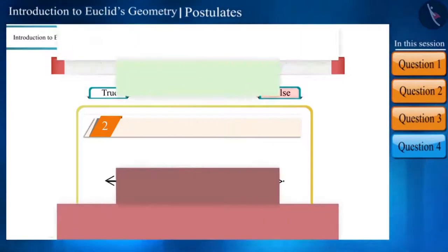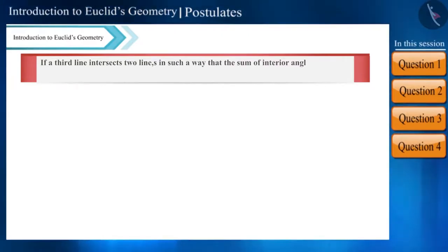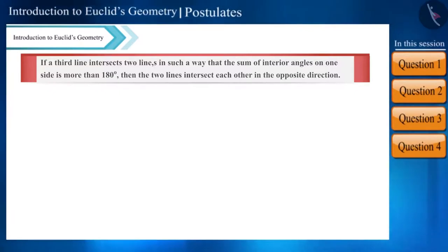If a third line intersects two lines in such a way that the sum of interior angles on one side is more than 180 degrees, then the two lines intersect each other in the opposite direction. Is the given statement true or false?